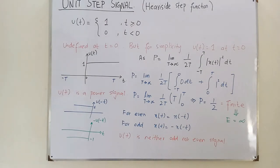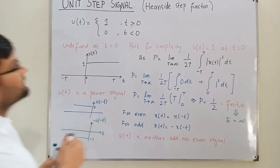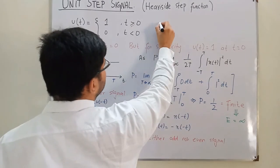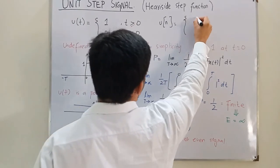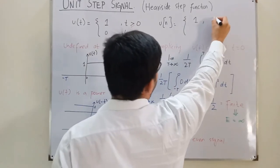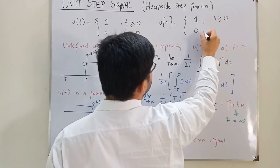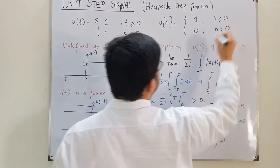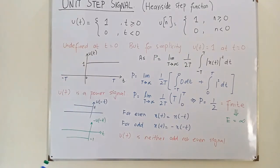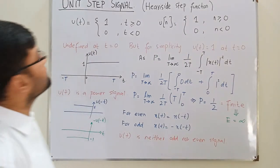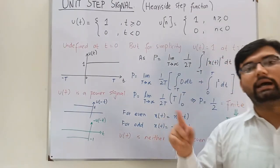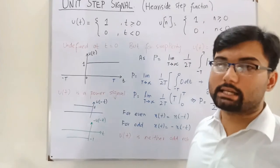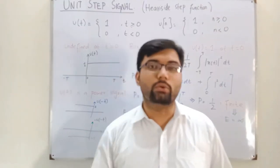We can also write the unit step signal in the discrete-time domain as u[n], which equals 1 for n greater than or equal to 0, and 0 for n less than 0. That covers all the properties of the unit step signal. In the next lecture, we will see the relationship between the unit step and unit impulse functions. Take care, goodbye.